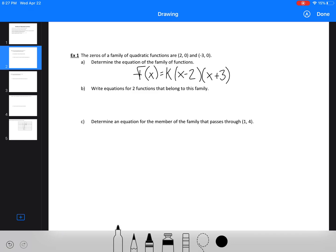So if we were to write 2 functions that belong to this family, we literally just have to pick any 2 values for our k value, and that would be 2 functions. It doesn't matter, you could pick your favorite number, you could pick your least favorite number, you could pick your favorite and least favorite, it really makes no difference at all, as long as they're not the same number.